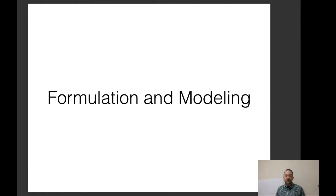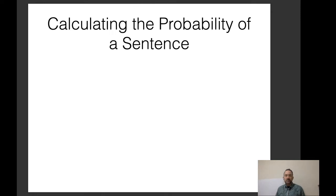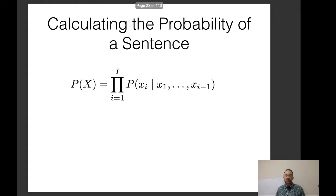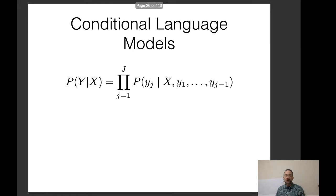First, let's jump into the formulation and modeling. What we've covered already in language modeling is calculating the probability of a sentence — specifically by decomposing it into the probability of the next word given all previous words and multiplying those probabilities together. Conditional language models instead calculate the probability of Y given X, conditioning on X, and at each step predict the next word in Y given all previous words in Y plus this additional context.